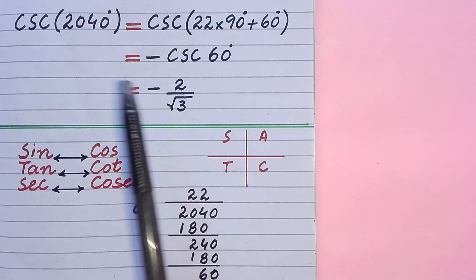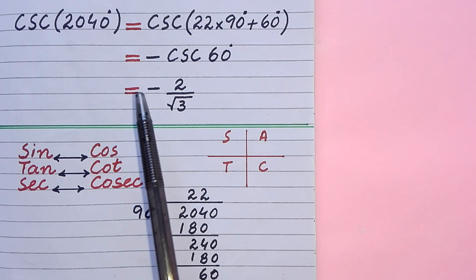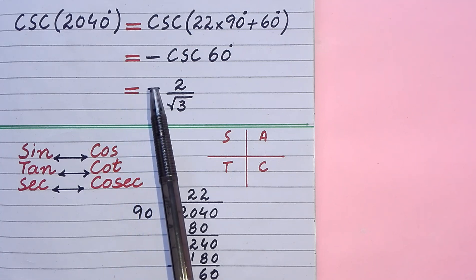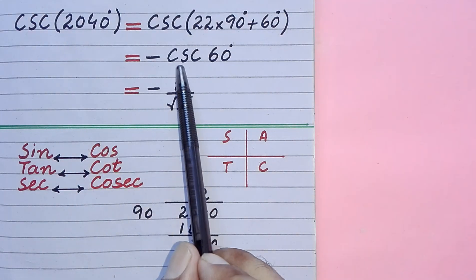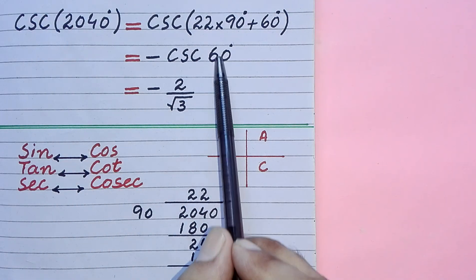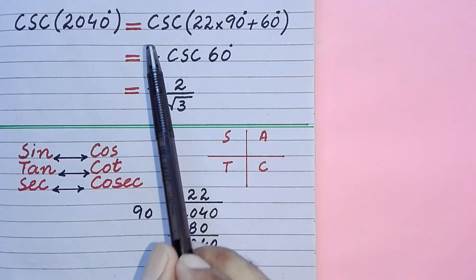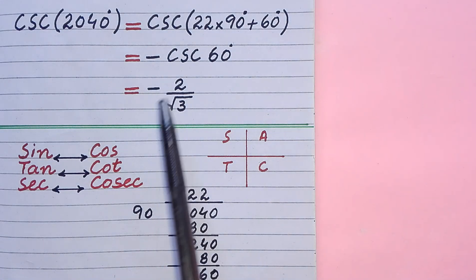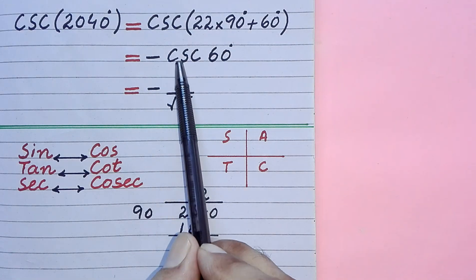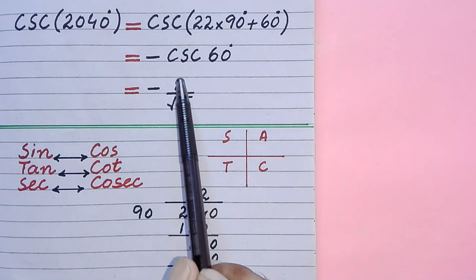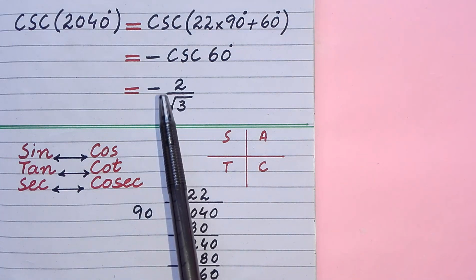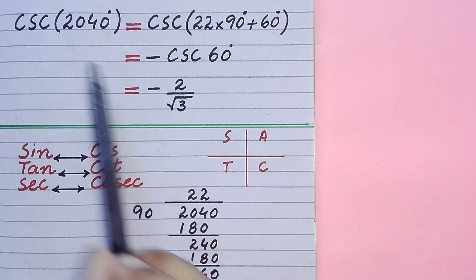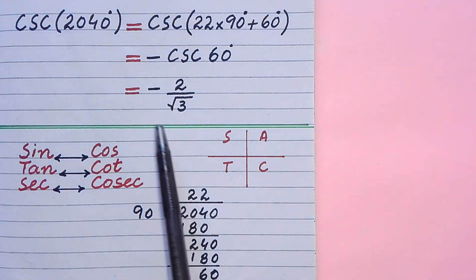In the third step, we use trigonometric ratios of 30, 45, and 60 degrees to find the value of the given trigonometric function. We have got cosec 60 degrees, and its value is 2 over square root of 3. So in place of cosec 60 degrees, we write 2 over square root of 3, and this is the value of the given trigonometric function.